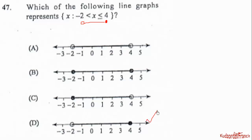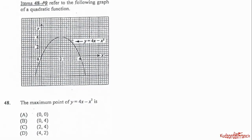Items 48 and 49 refer to the graph of a quadratic function. This is a maximum graph, so the highest point is the maximum point. Moving 2 units along the x-axis and 4 units up gives the coordinate (2, 4). Therefore the maximum point is (2, 4).